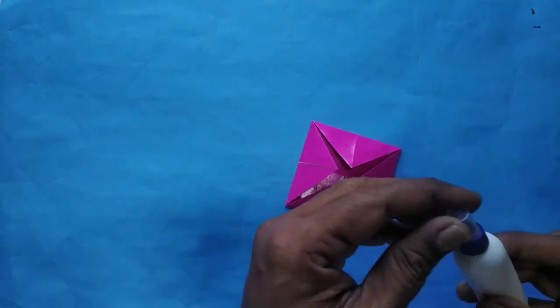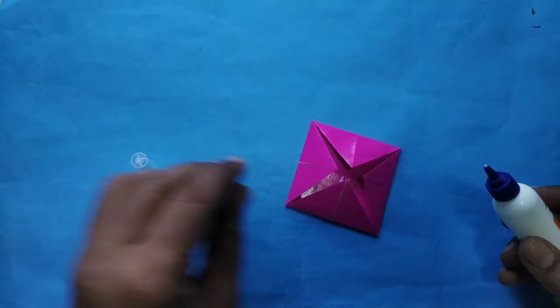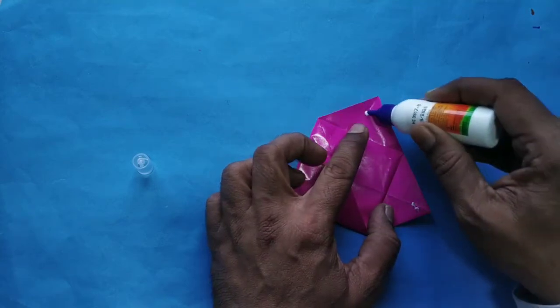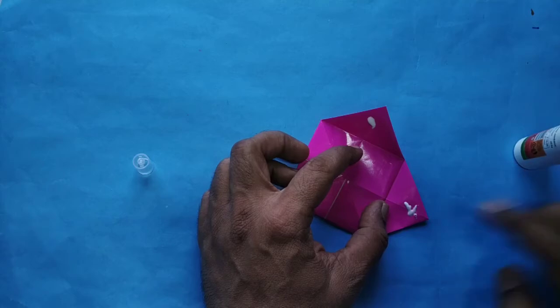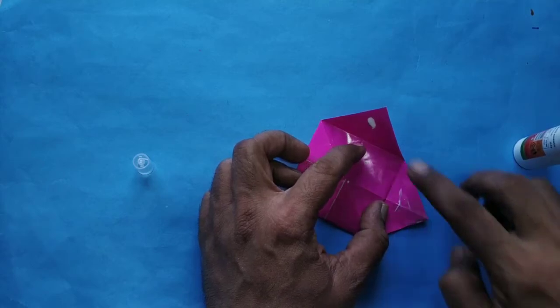You have to put the glue on the back side, so there will be no problem then. It won't come out.